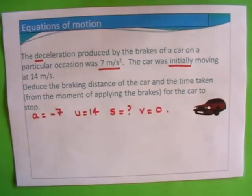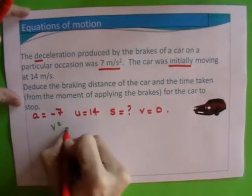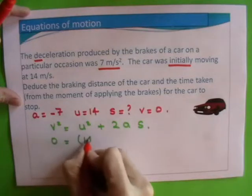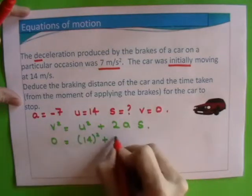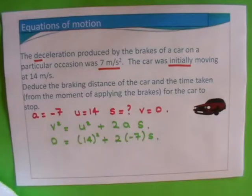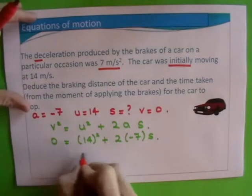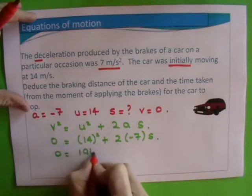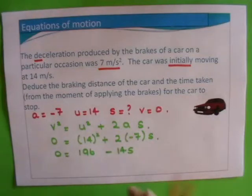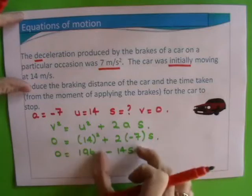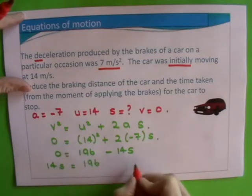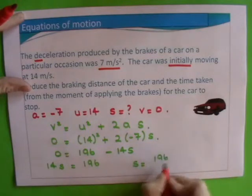So v squared equals u squared plus 2as. Zero is equal to 14 squared plus 2 times minus 7 times s. So 14 squared is 196, and then that's going to be minus 14s. Therefore, to get an answer, I'm going to bring the 14s across. It's minus at the minute, it will become plus when I bring it over, and that's equal to 196. So therefore s is equal to 196 divided by 14.